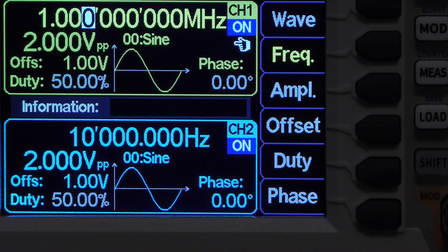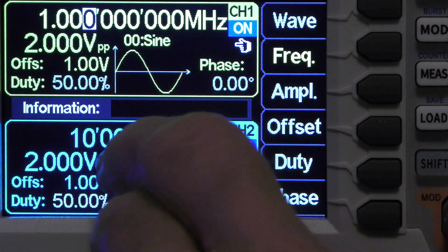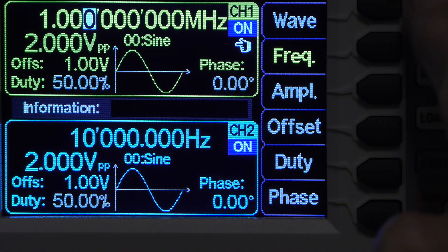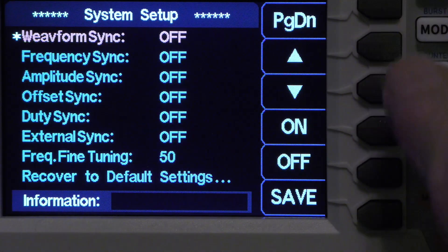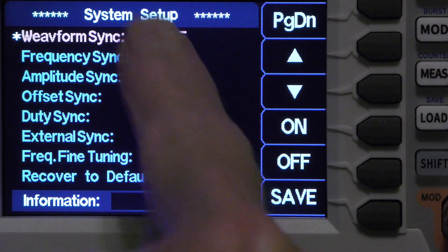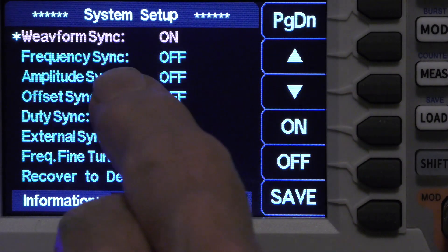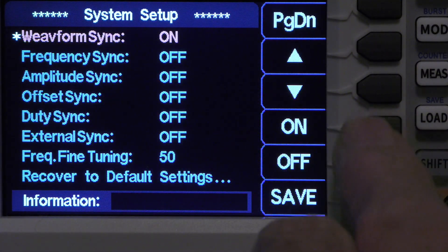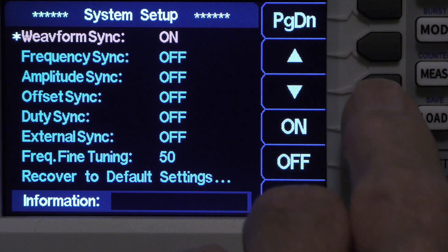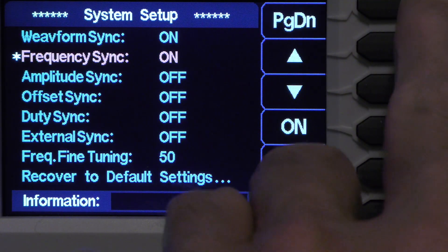I've set up channel 1 on this PSG 9080 to be a 1 MHz sine wave. Now what I'm going to do is I'm going to go into the system menu and page down. You notice that it says waveform sync off and I'm going to turn that on, and then it says frequency sync off and I'm going to turn that on, like that.